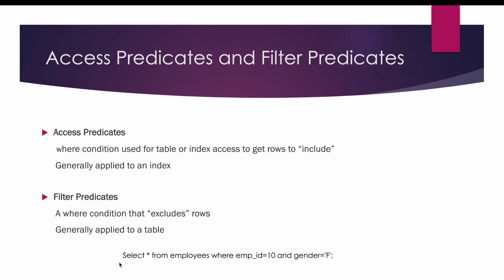If you want to execute the query: SELECT * FROM employees WHERE employee_id = 10 AND gender = 'F', you first have to touch the employees table. You can't scan the entire table — that leads to a full table scan. Since we have WHERE clause predicates — employee_id and gender — we can use the index built on employee_id, and if an index exists on gender, we can use that too. These indexes become your access predicates.